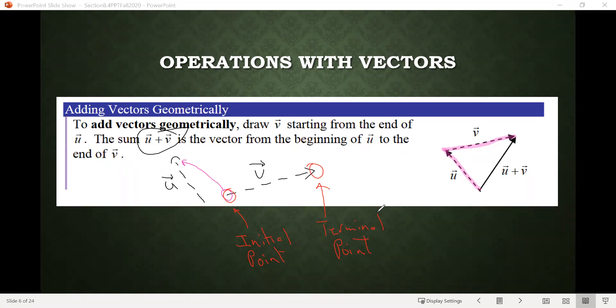Then to draw the resultant vector that we get from adding the two, we start at the initial point of u and go to the terminal point of v. So that's what you see here, and that vector I highlighted in yellow, that would be the vector u plus v. Let's look at another example of this.